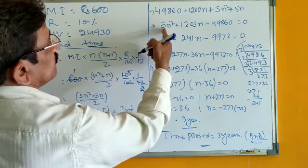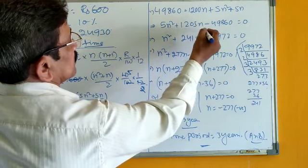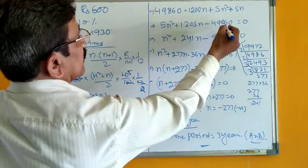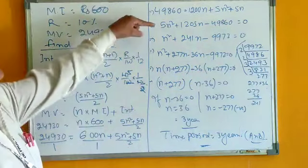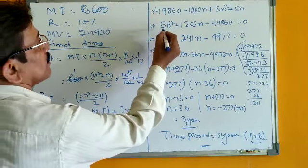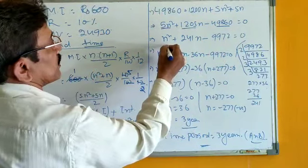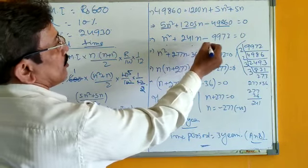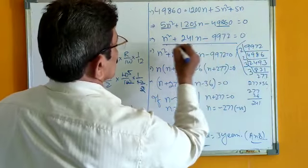Finally, the equation is 5N square plus 1205N minus 49,860, which is equal to 0. This is quadratic expression. Now, write in simplest form, divided by 5 for each term, so that we get N square plus 241N minus 9970 equal to 0.